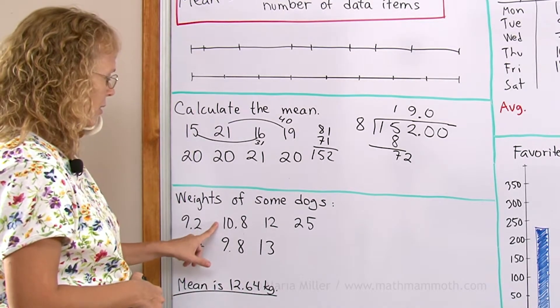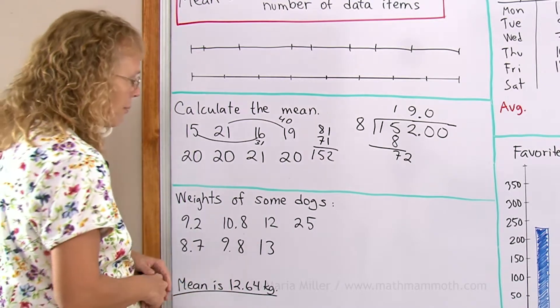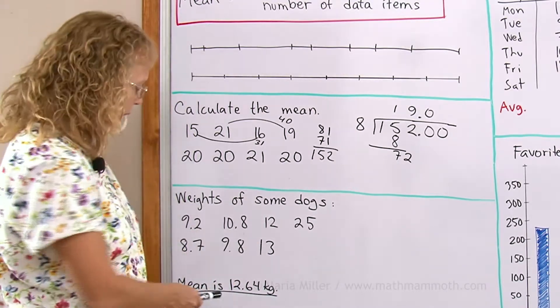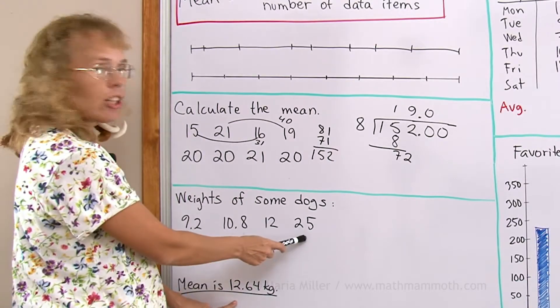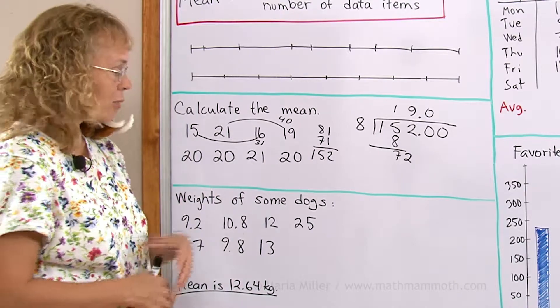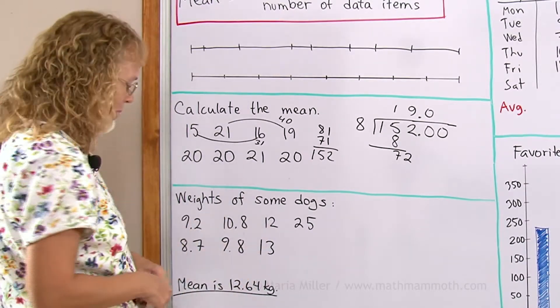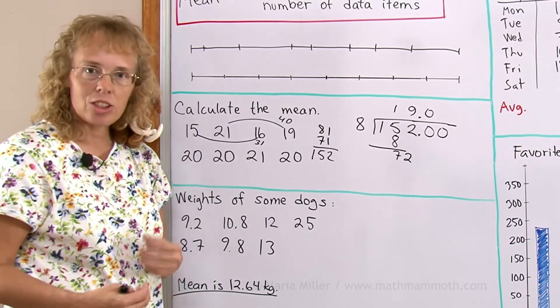Some dogs weigh 9, almost 11, 12, 8.7, 9, something to 13. Now the question is, how will this change if this dog leaves the kennel? The dog that weighs 25 kilograms. It's way bigger than these other dogs. It's the biggest dog. Can you tell? How is the mean going to change?